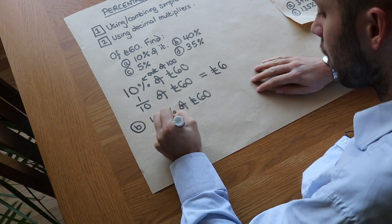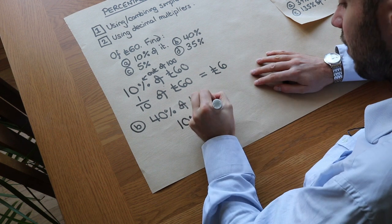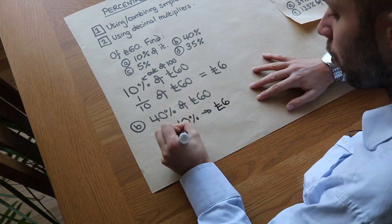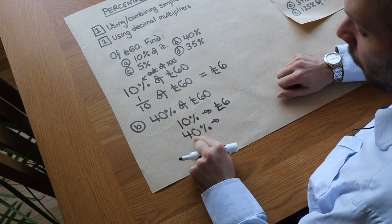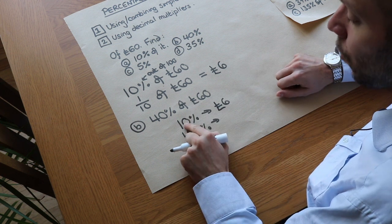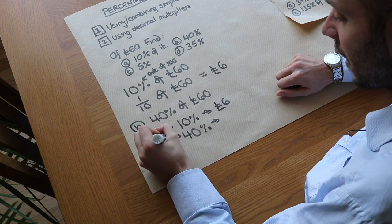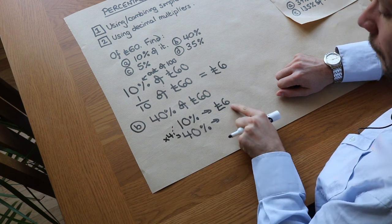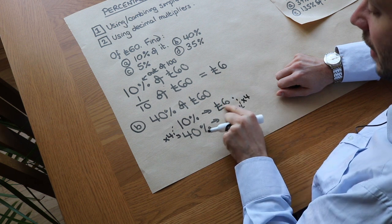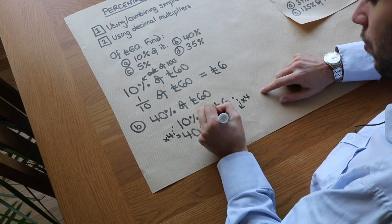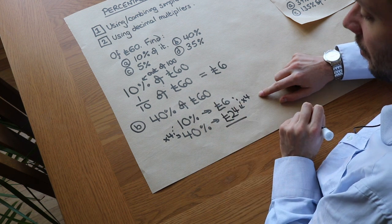What we can do is say: if 10% equals £6, what would 40% be? Well, 40% of something is four times bigger than 10%, because 40 is four times bigger than 10. So we're just scaling — £6 times 4 equals £24, and that's our answer.